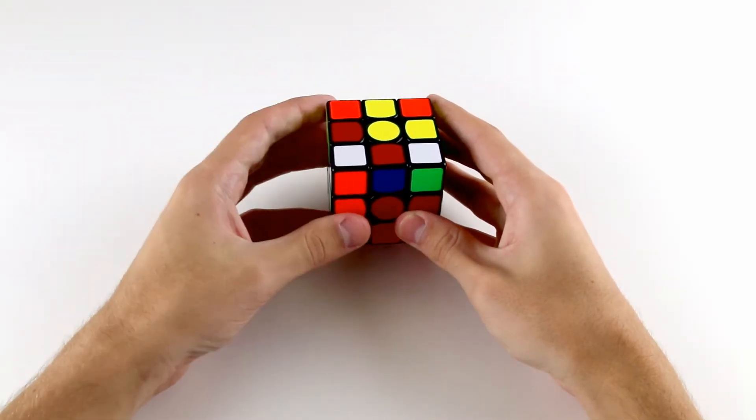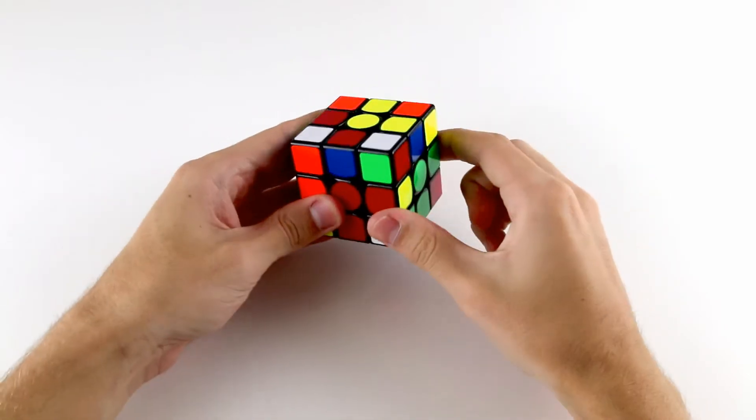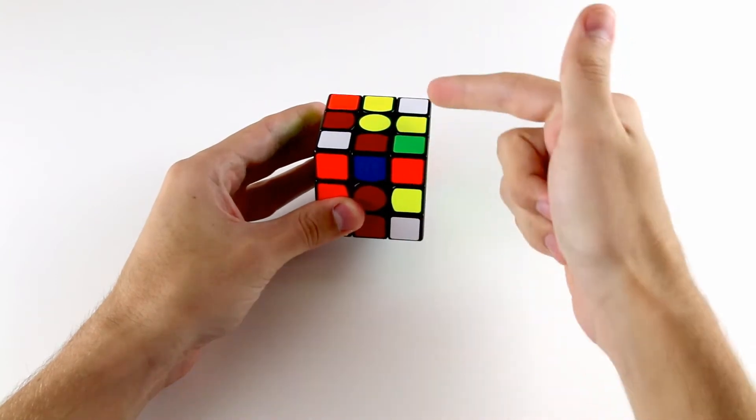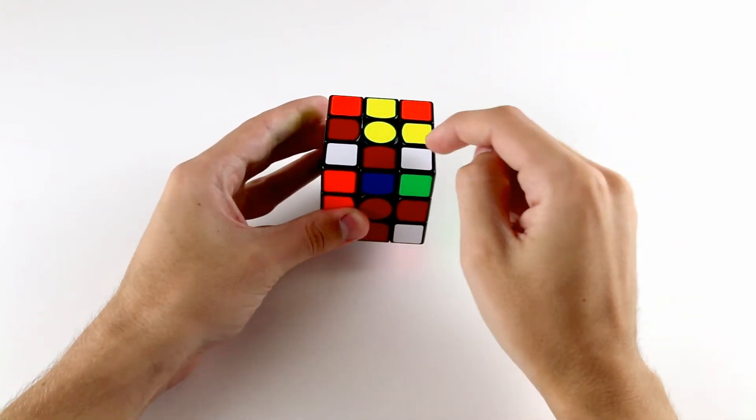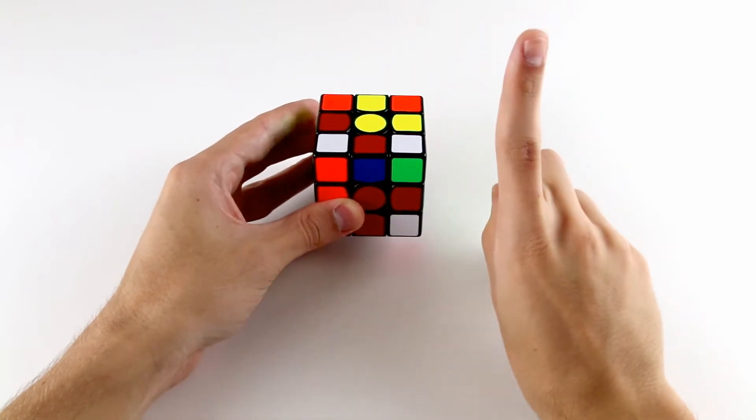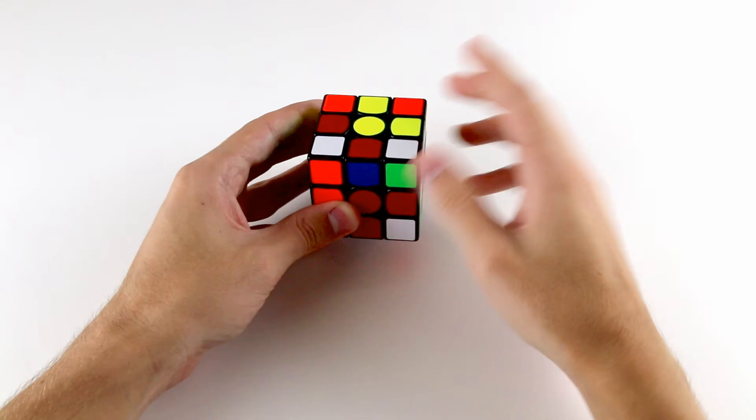In the first two cases when we solved our F2L pairs, what we did was we hid the corner in the bottom layer, moved the edge around the top layer, and brought the corner back up to either put the edge in that position and leave the corner here for case one, or to match them up for the second case.